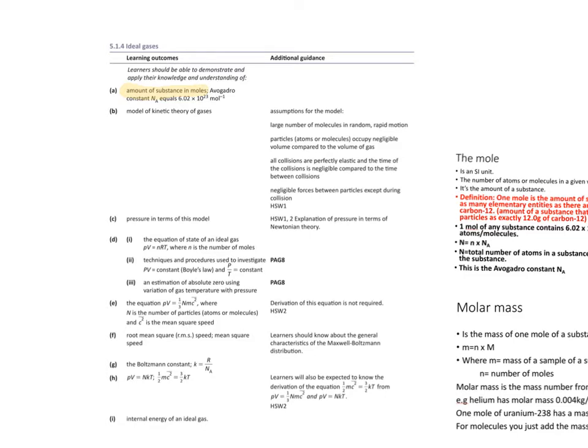I will be having a look first at the amount of a substance in moles and how to basically use Avogadro's constant. The model theory or kinetic theory of gases, in more particular ideal gases and assumptions that we make, and then how pressure can be expressed in terms of this model. This will need you to be able to use theories, Newton's theories as well, to be able to explain mathematically.